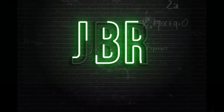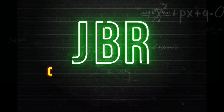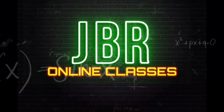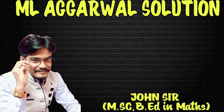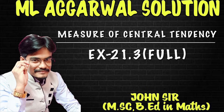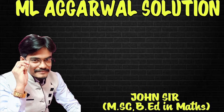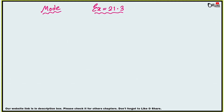Hello everyone, welcome back to my channel JBR Online Classes. In this video I'm going to start Exercise 21.3 from the book of Emil Agarwal. The first problem, question number one, is to find the mode of the following sets of numbers.